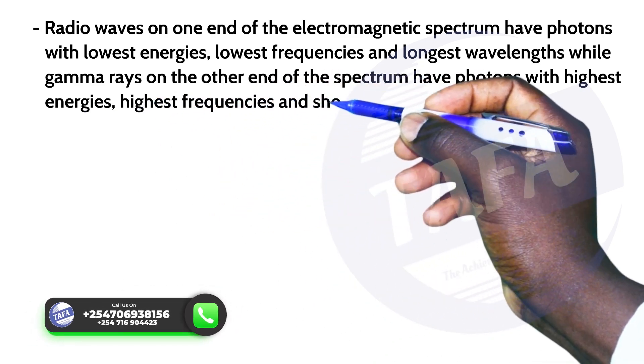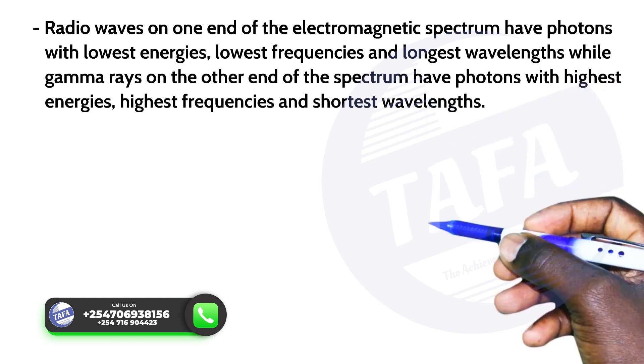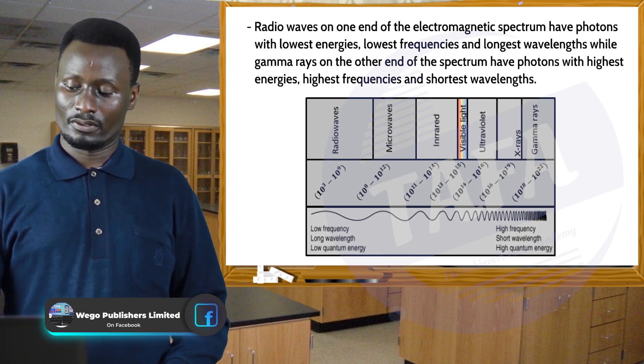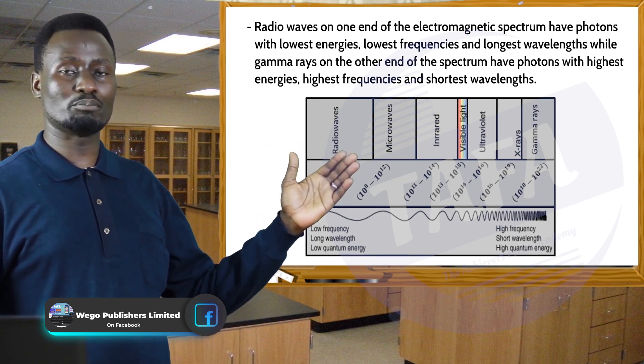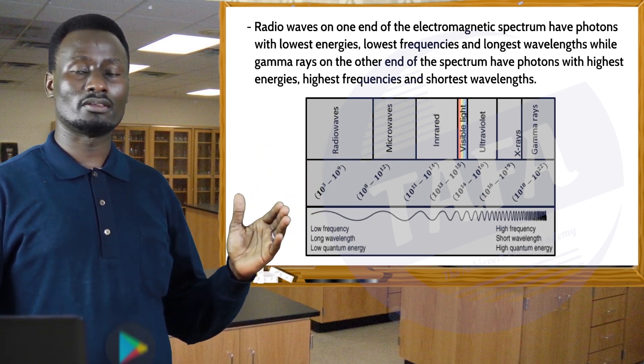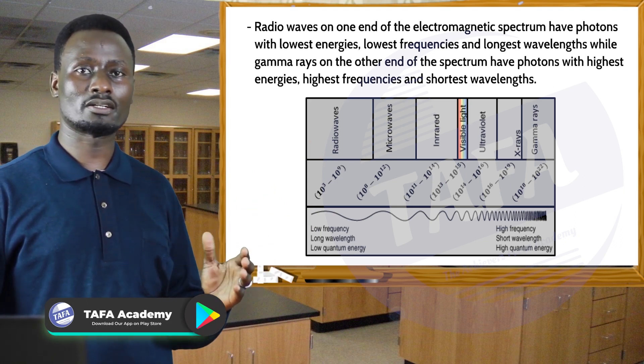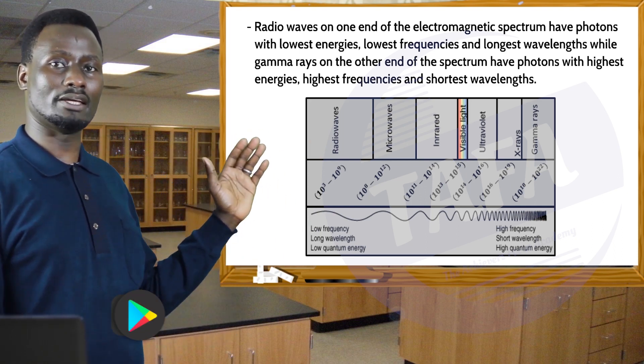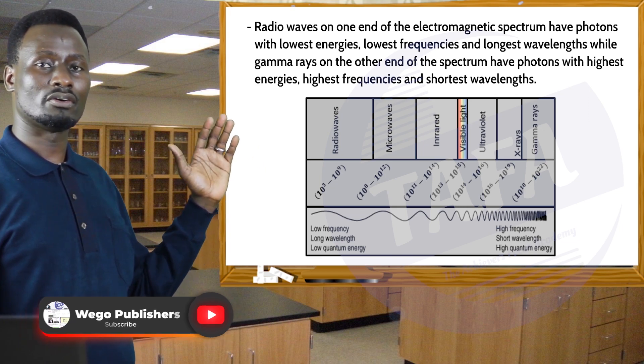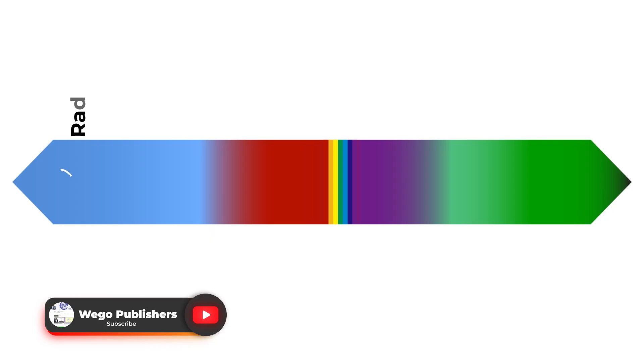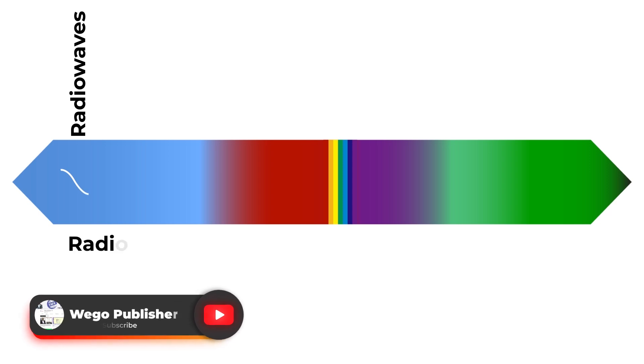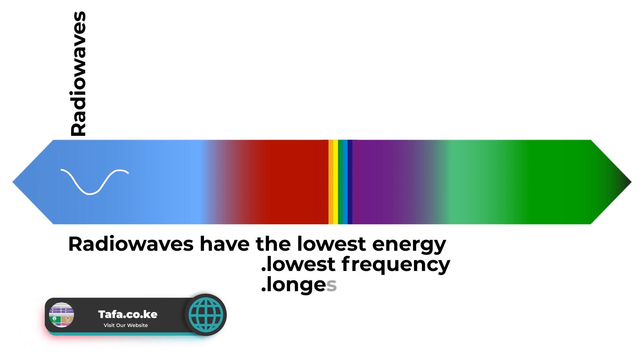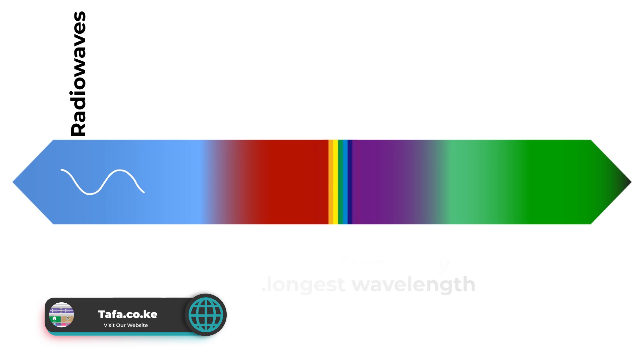The diagram below shows the entire electromagnetic spectrum. On the left-hand side we have radio waves, and radio waves, as I have said, have the lowest energy, lowest frequency, and longest wavelength. This is followed by microwaves.